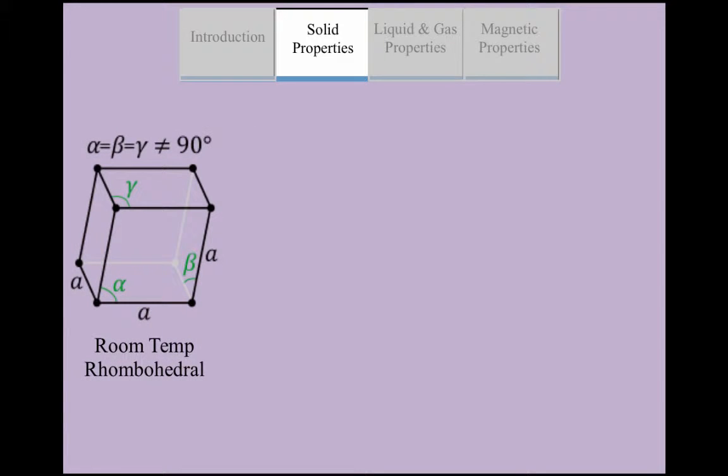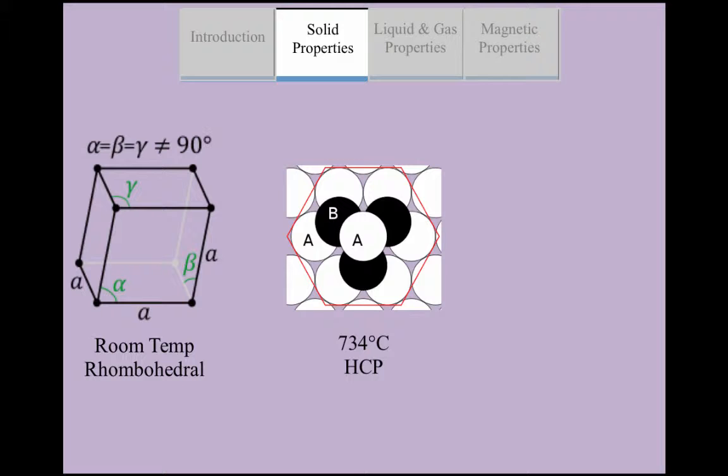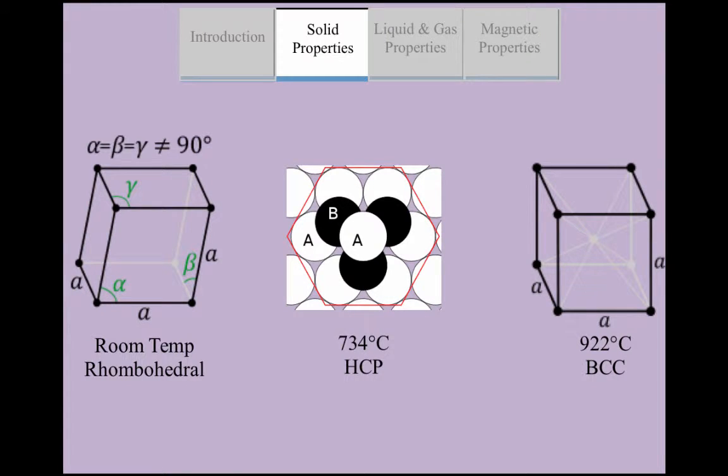Its crystal structure is rhombohedral at room temperature. At 734 degrees Celsius, the crystal structure becomes hexagonal close-packed, and at 922 degrees Celsius, it becomes body-centered cubic.